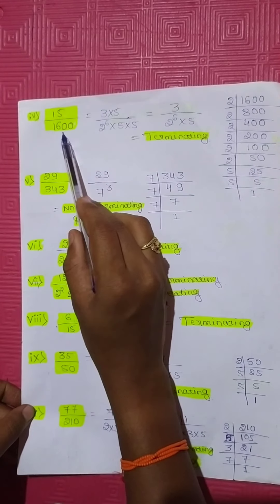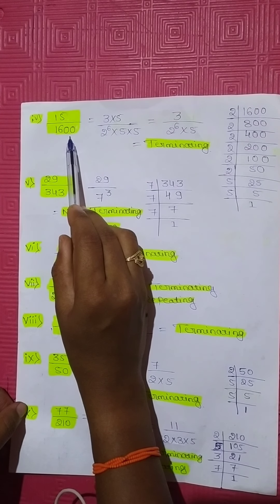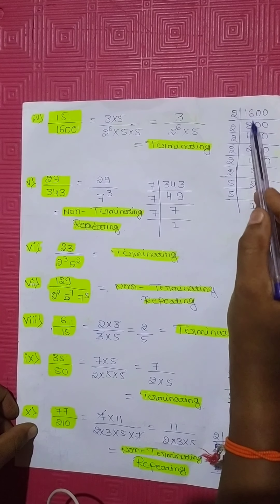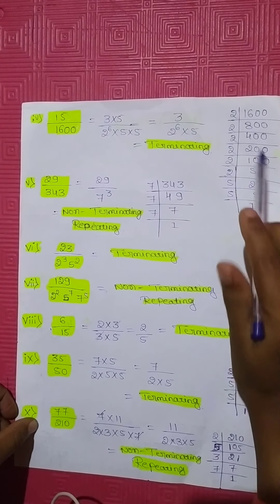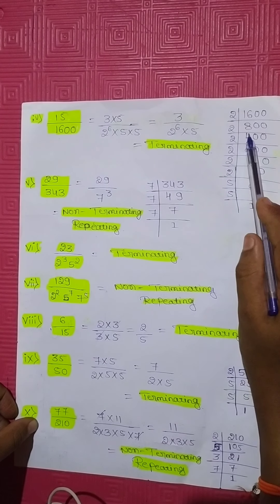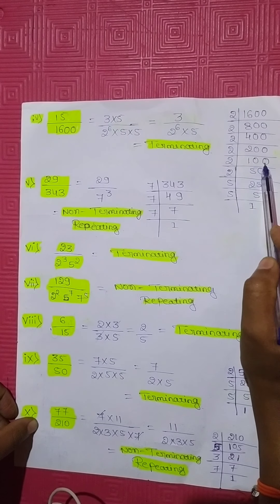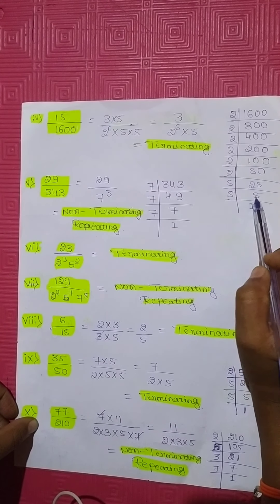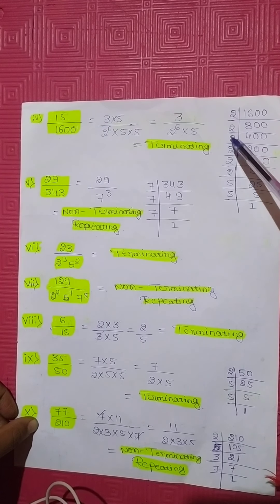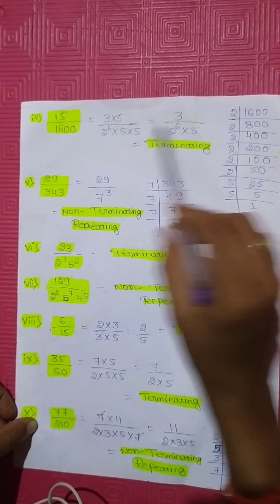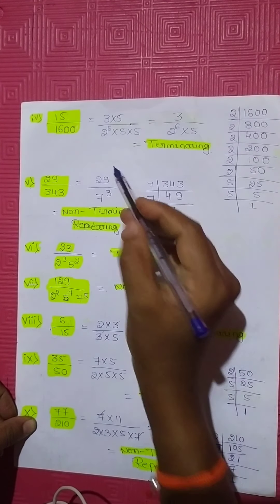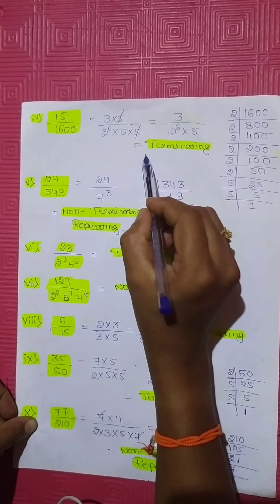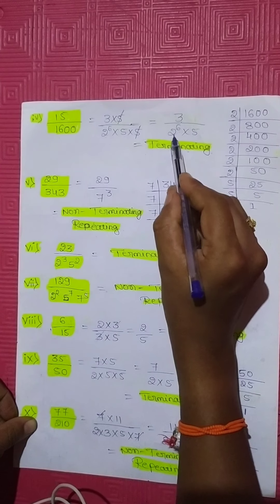Fourth question: 15 divided by 1600. 15 can be written as 3 into 5. The denominator 1600 in prime factorization gives 2 appearing 6 times into 5 squared, i.e., 2 to the power of 6 into 5 squared. The 3 and 5 cancel from numerator and denominator, leaving 3 divided by 2 to the power of 6 into 5. Since the denominator contains only 2 and 5, this is a terminating decimal.